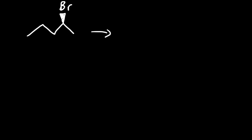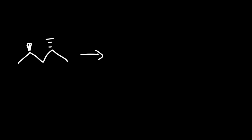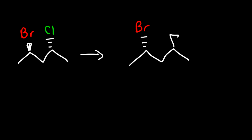How would you draw the enantiomer of this molecule? The bromine is on the wedge — all you need to do is put it on the dash. Now try this one with two substituents, a bromine atom and a chlorine atom. The bromine is on the wedge, so reverse it and put it on the dash. The chlorine is on the dash, so place it on the wedge. That's a simple way to draw the enantiomer without using a mirror.